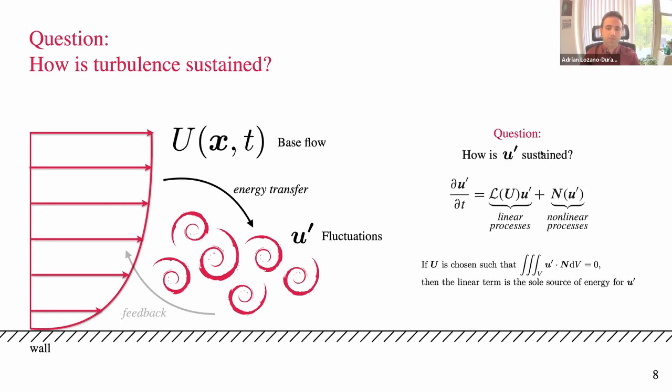This is the connection with 'linear mechanisms' from the title. This property holds as long as we choose the base flow correctly. A useful base flow is one that represents larger-scale features of the flow and satisfies this energy property. That simplifies the analysis so I can focus only on linear processes, for which we have a very well-developed theory — unlike nonlinear processes, which are much more complicated.